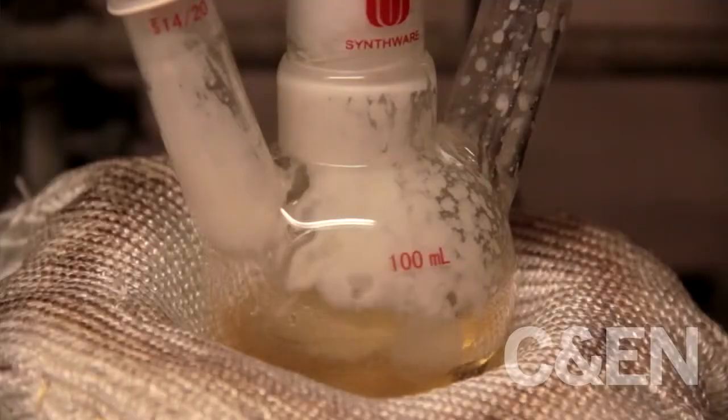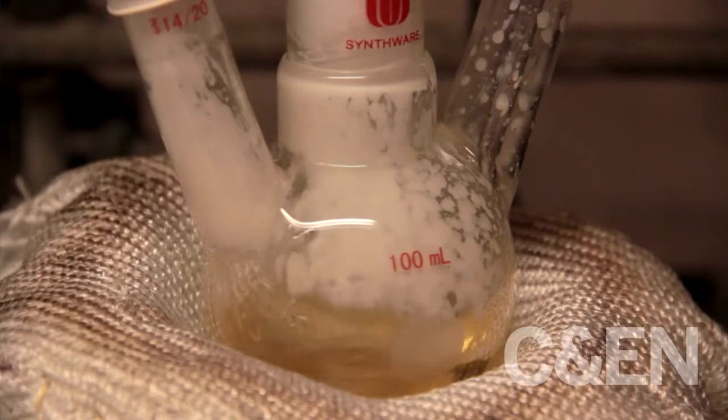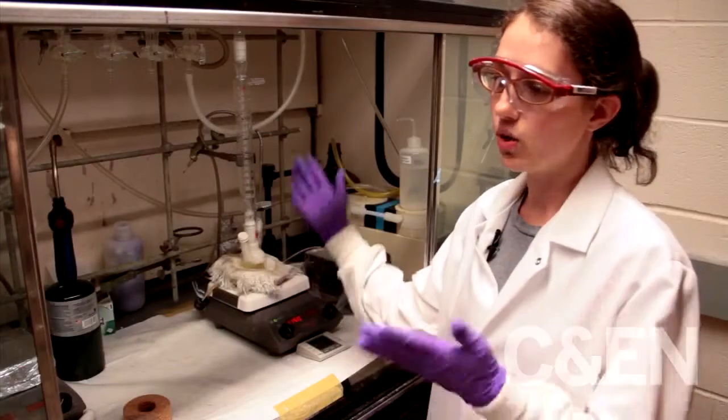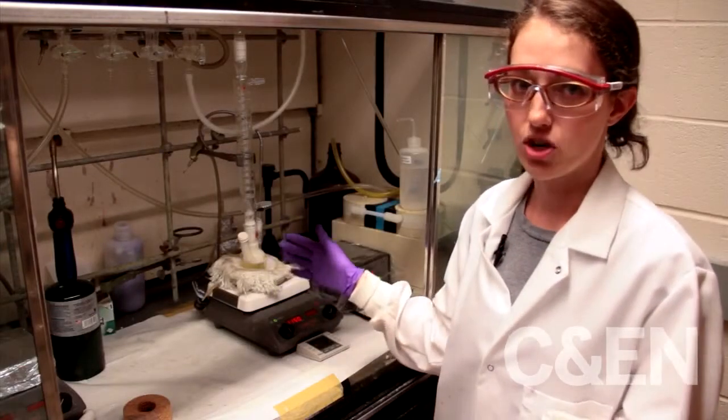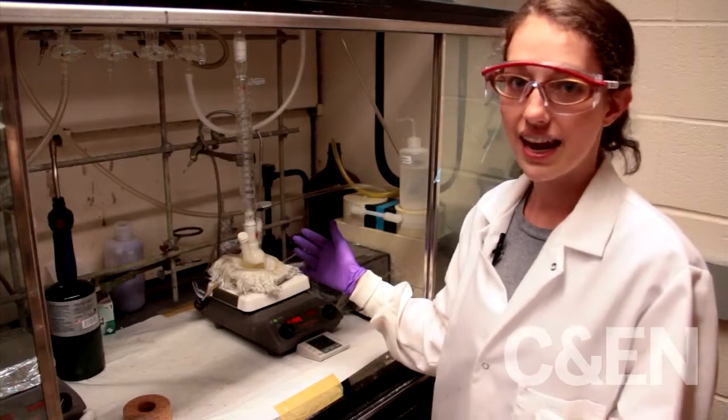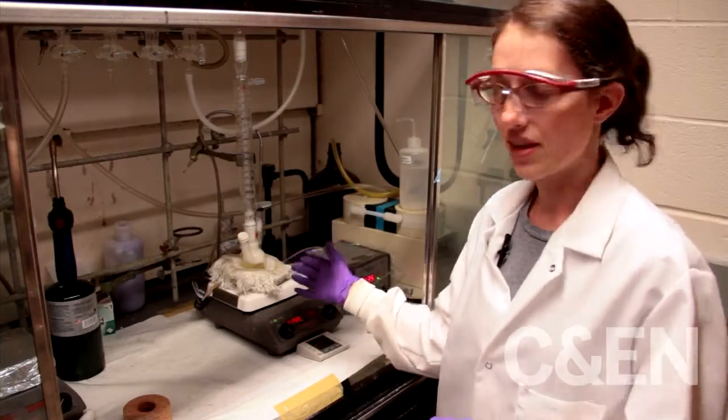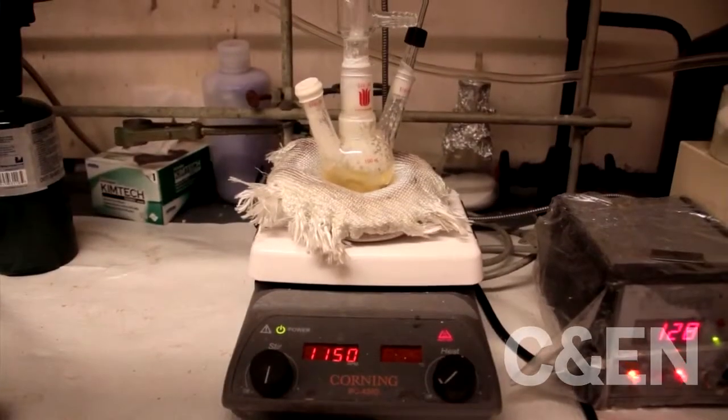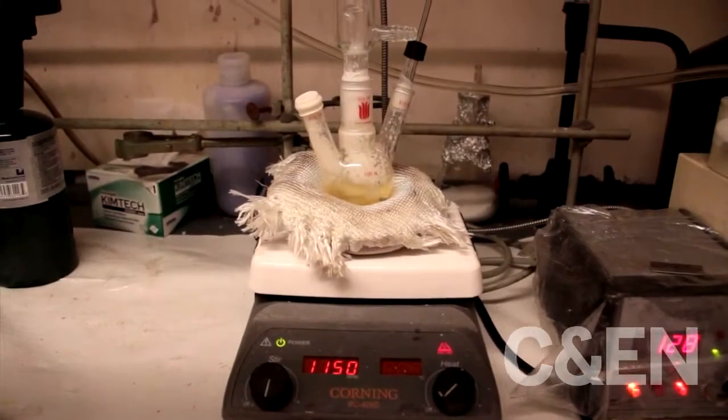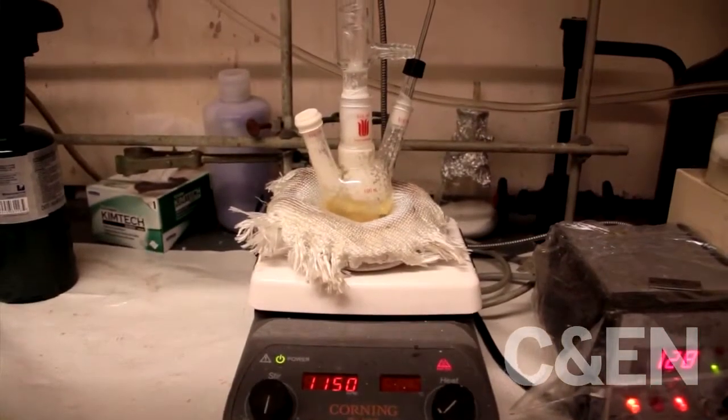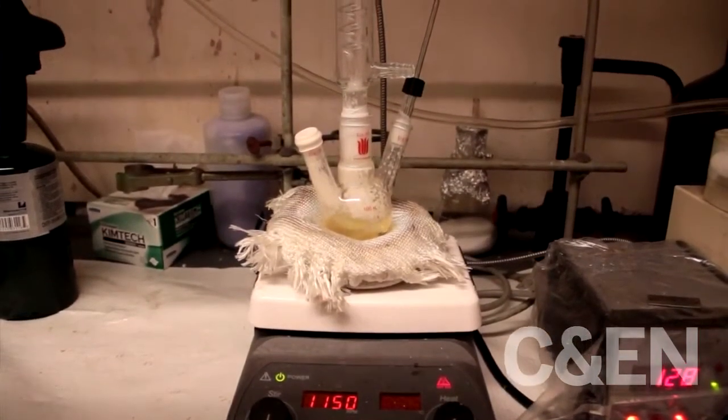In here we have some stearic acid and cadmium oxide that we heat up to dissolve the cadmium oxide in the stearic acid. Then we cooled it back down and added some tri-octylphosphine oxide and some hexadecylamine. We heated that up again until it all melted and we have been putting it under a vacuum to get rid of all of the water inside.